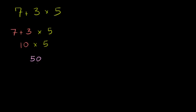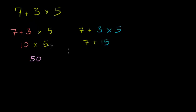Another way you could interpret it: you say, I like to do multiplication before I do addition. So you might interpret it as 7 plus, and you do the 3 times 5 first — 7 plus 3 times 5, which would be 7 plus 15, since 3 times 5 is 15. And 7 plus 15 is 22. So notice, we interpreted the statement in two different ways and get two different answers. That's just not cool in mathematics.